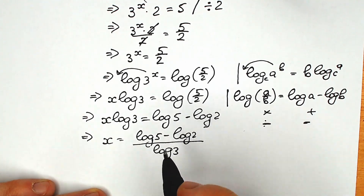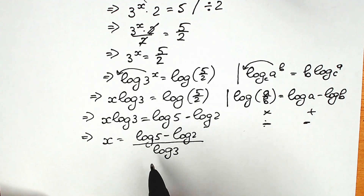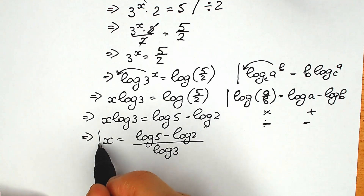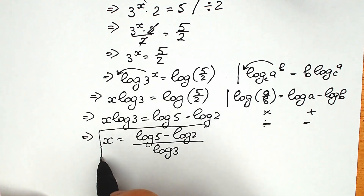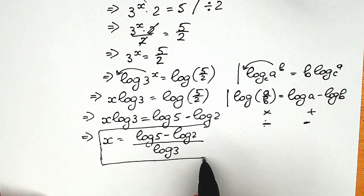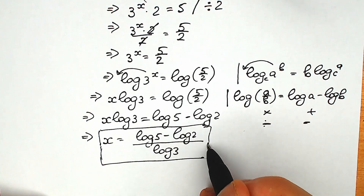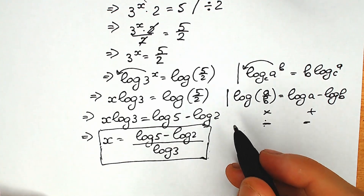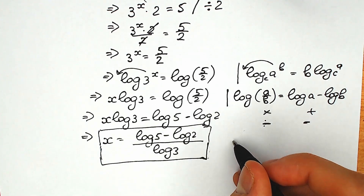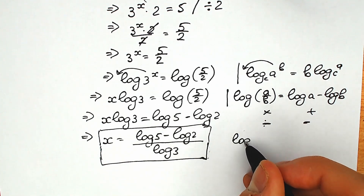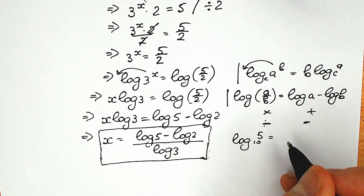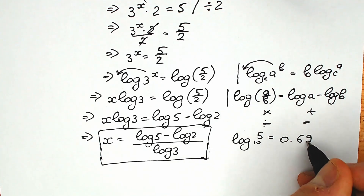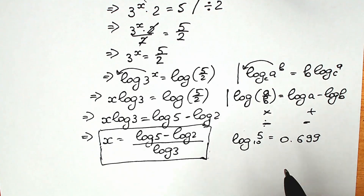As a result, we have x equal to (log 5 minus log 2) divided by log 3. This is our answer, because each of these elements are constants. Now I'm going to show you how to find the approximate value. You know that log 5, base 10, equals approximately 0.699.